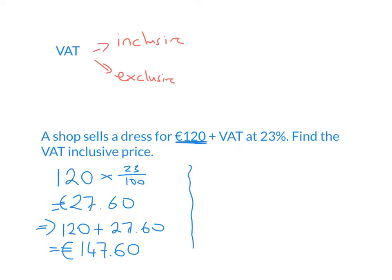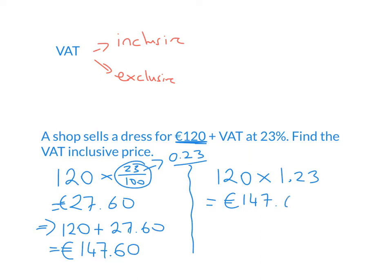Another way to calculate this is using multipliers. We know 23% is the same as 0.23. Instead of multiplying €120 by 0.23 and then adding, we multiply by 1.23 directly. This gives us €147.60 straight away — because we're finding the 23% and keeping the original 100% of €120 at the same time. That's a useful trick to do these questions a little bit quicker.